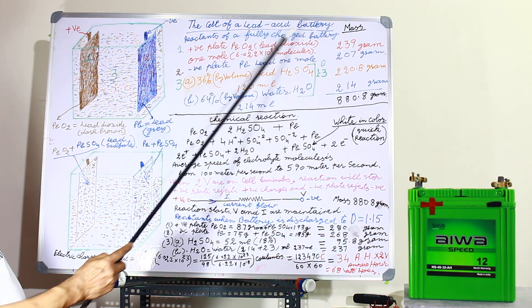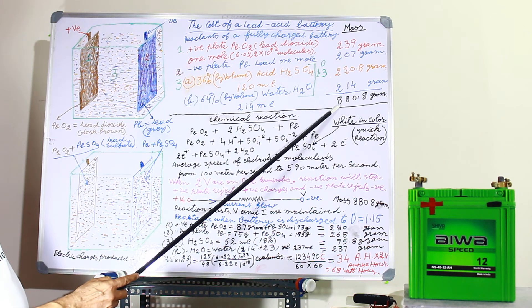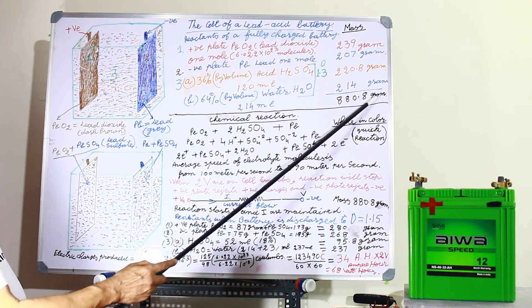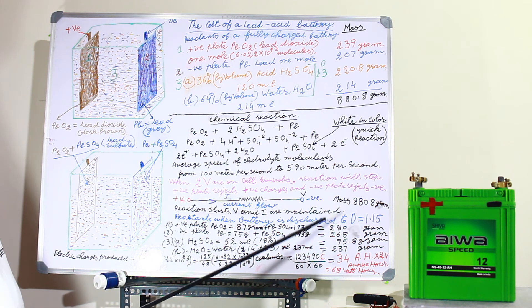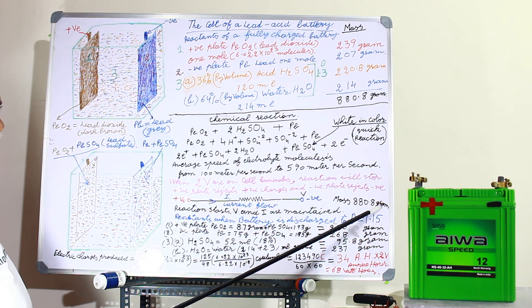And now we calculate that before the action started, it was 880.8 grams total reactant mass. But after discharge, the reactant mass will be 880.8 grams. Only the difference will be there will be more solids and less liquid.